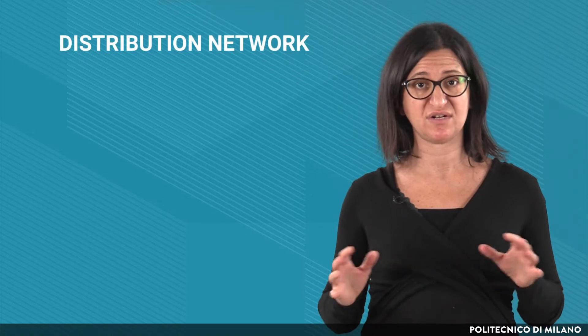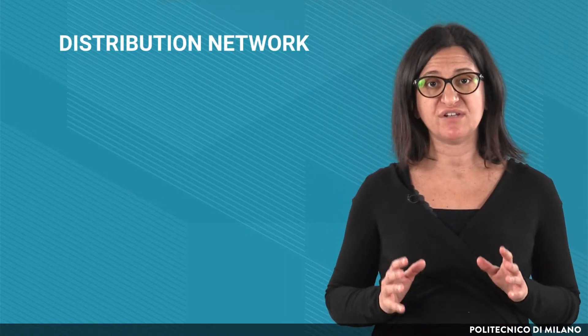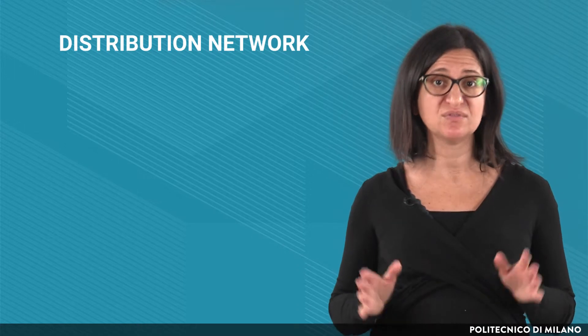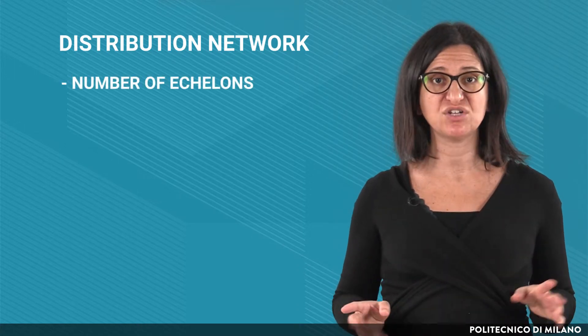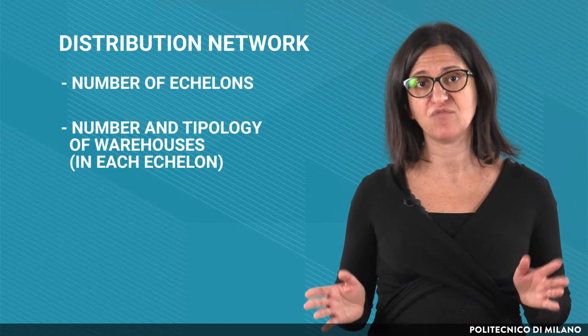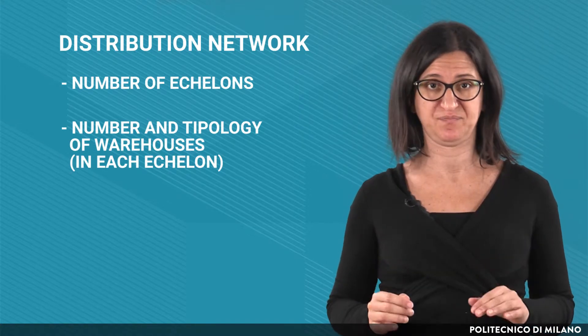After the transport modes, let's consider the taxonomy of the distribution network. Distribution networks can be classified on the basis of two dimensions: the number of echelons, and the number and typology of warehouses in each echelon.